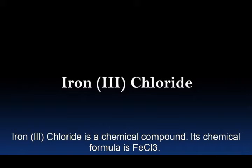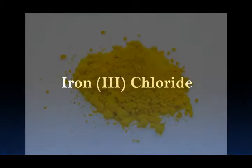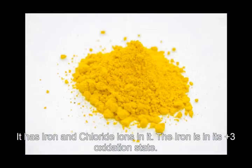Iron chloride is a chemical compound. Its chemical formula is FeCl3. It has iron and chloride ions in it. The iron is in its plus three oxidation state.